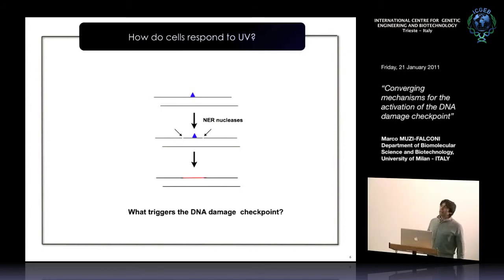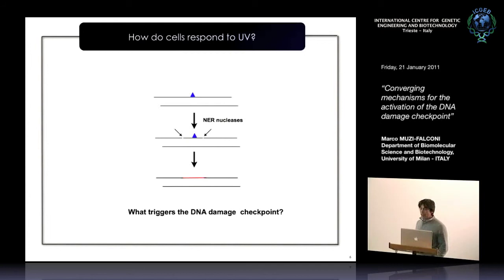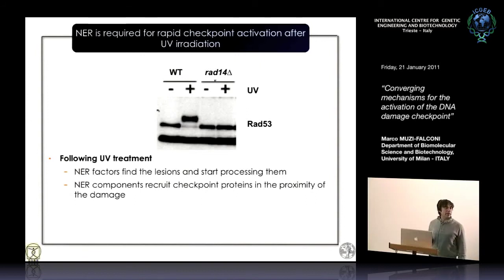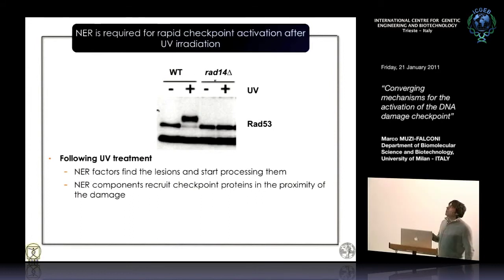The question we were interested in asking is: how do cells activate the DNA damage checkpoint after UV irradiation? Where in this response are checkpoint factors coming in? A few years ago, we realized that you need nucleotide excision repair in order to activate the checkpoint. Here is RAD53 — when it's fully phosphorylated, the checkpoint is fully active. In wild-type cells treated with UV, the checkpoint is activated and RAD53 is fully phosphorylated. In a RAD14 mutant, which is completely defective in nucleotide excision repair, there is no activation of the kinase.